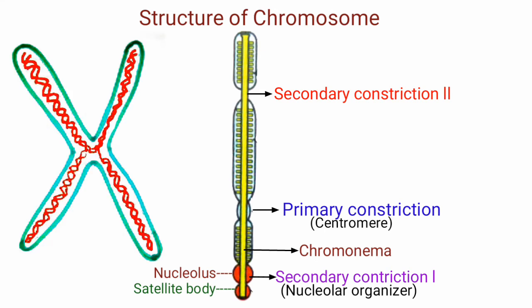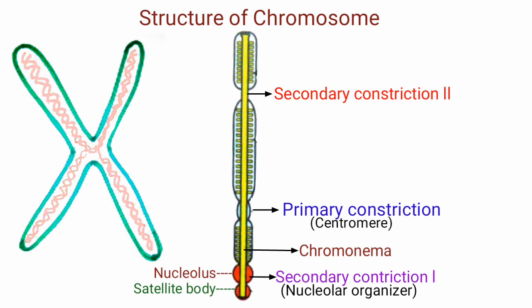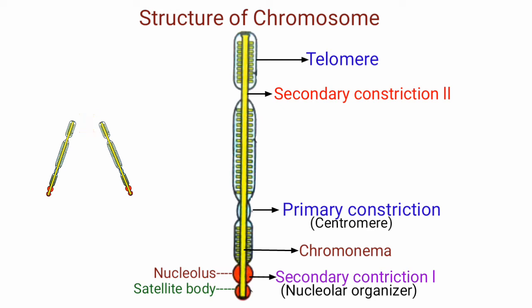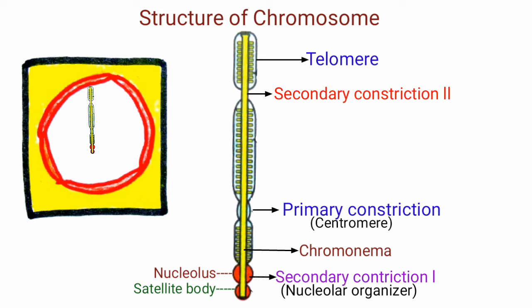Chromatids consist of a double-stranded DNA molecule which extends from one end of the chromosome to the other. The tip of the chromosome is called the telomere. It has a unique property in that it prevents the ends of the chromosome from sticking together, but attaches to the nuclear envelope.